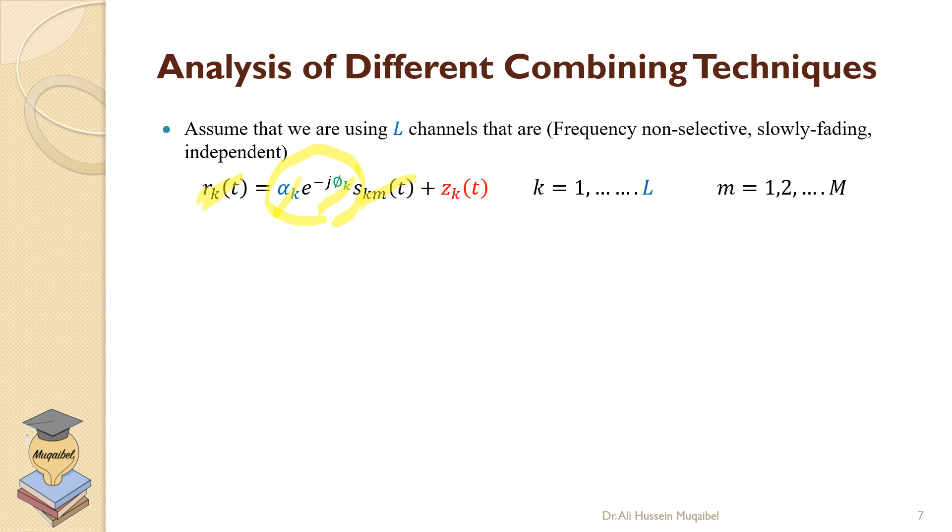In addition to that, we're going to have additive white Gaussian noise, whether we refer to this with z or n_k. The subscript k stands for the different channels we're going through, so the diversity order here is capital L. We have k or L different received signals.